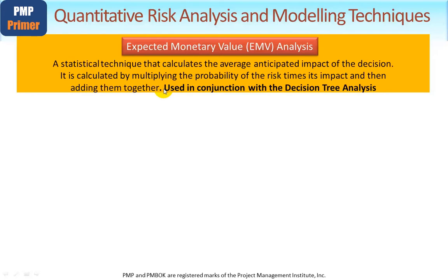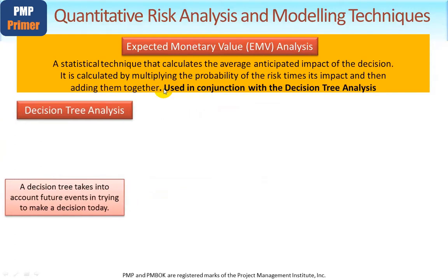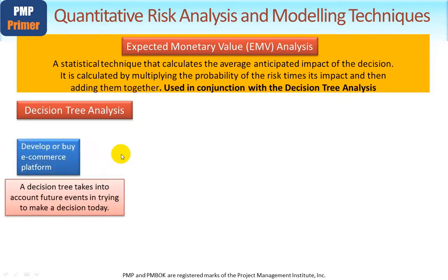I have two examples to show you here. Let's work through the first one together. A decision tree takes into account future events in trying to make a decision today. Suppose the project in your organization wishes to either develop or buy out a particular e-commerce platform, and you're not sure whether to develop it in-house or to get a third party to provide it. You need to gather some raw data. Let's suppose we've done some work on the risk between making this decision, and we've determined that the risk cost would be around $2.78 million.